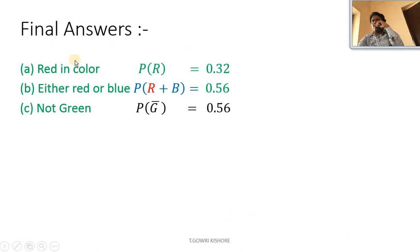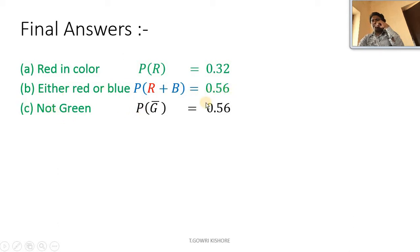Final answers: probability of getting a red colored ball is 0.32, probability of getting either red or blue is 0.56, and probability of not getting a green ball is 0.56.